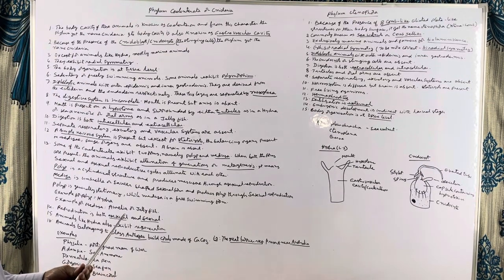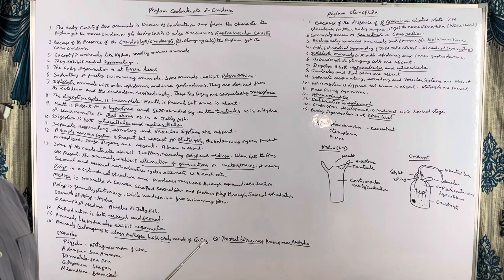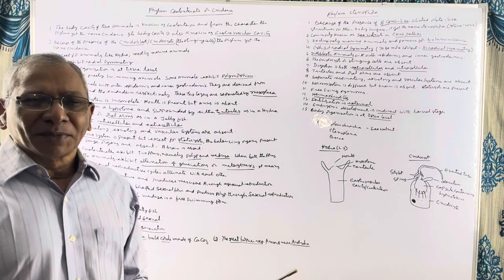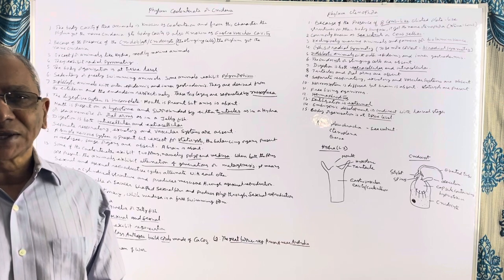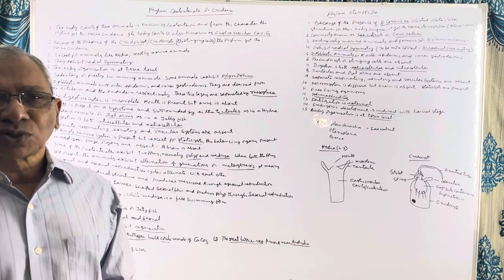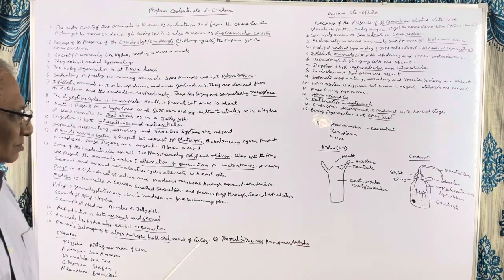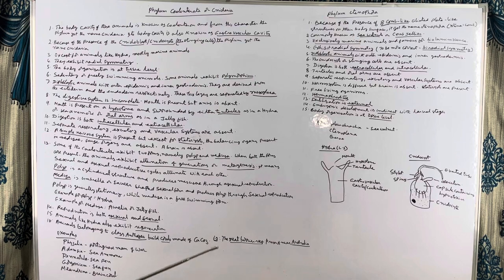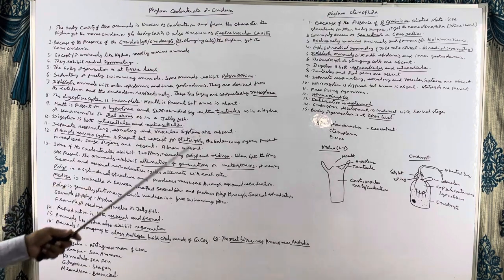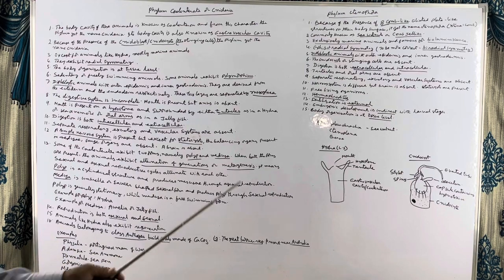Some animals also exhibit polymorphism, where they have many types of polyps and many types of medusa. Physalia, the Portuguese man-of-war, is a good example of polymorphism. The ectoderm and endoderm are separated by mesoglea.